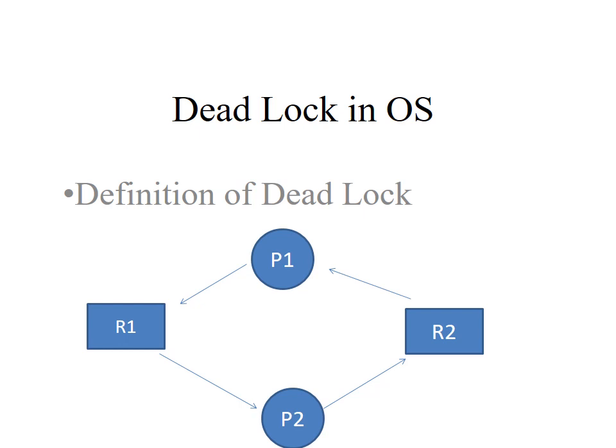Let us see an example given in the figure, which contains two processes — process 1 and process 2 — and also contains two resources: resource 1 and resource 2. In the given figure, process 1 allocates resource R2 but process 1 is requesting resource R1. Likewise, process 2 already allocates resource R1 but process 2 is requesting resource R2. This situation is called deadlock.